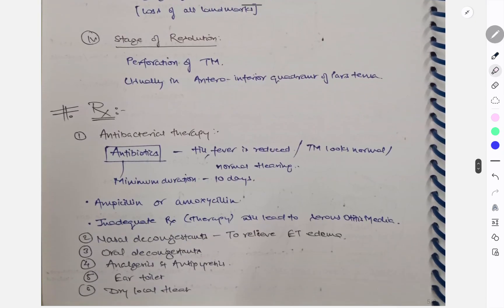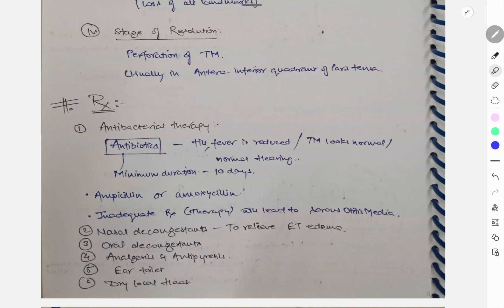So what is the treatment? So first the treatment includes investigations also. So what all things you need to do? A simple otoscopy, endoscopy, and then culture that will help. So what are the treatments? What things we use here? So antibacterial therapy - we use antibiotics and the minimum duration would be of 10 days till fever is reduced and tympanic membrane looks normal and hearing is normal. We have to use antibiotics. It should not be used for lesser days. So what is the drug of choice actually? Ampicillin or amoxicillin. Then inadequate treatment therapy will lead to serous otitis media. So I have told that if it is used less than 10 days, it may lead to serous otitis media.